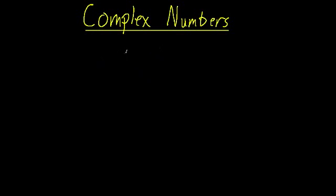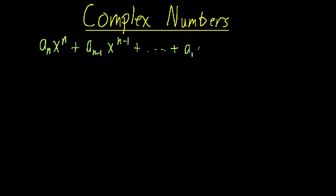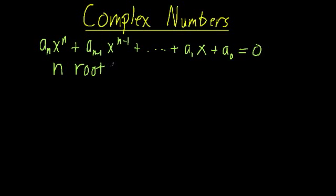Hello, and welcome to our introduction to complex numbers. To provide a little motivation, let's say we have an n-th order polynomial of the form: a_n times x^n, plus a_(n-1) times x^(n-1), all the way down to a_1 times x, plus a_0, equal to zero. In general, an n-th order polynomial is going to have n roots, or n solutions, which we can denote as x1, x2, all the way up to xn.